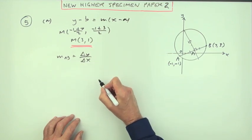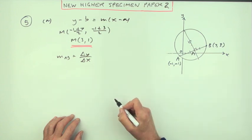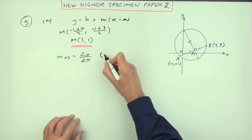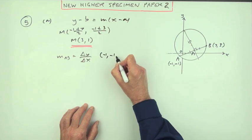So the gradient of AB will be the difference in the y-coordinates and the difference in the x-coordinates between two points on it. You can write y2 minus y1, it's the same thing.